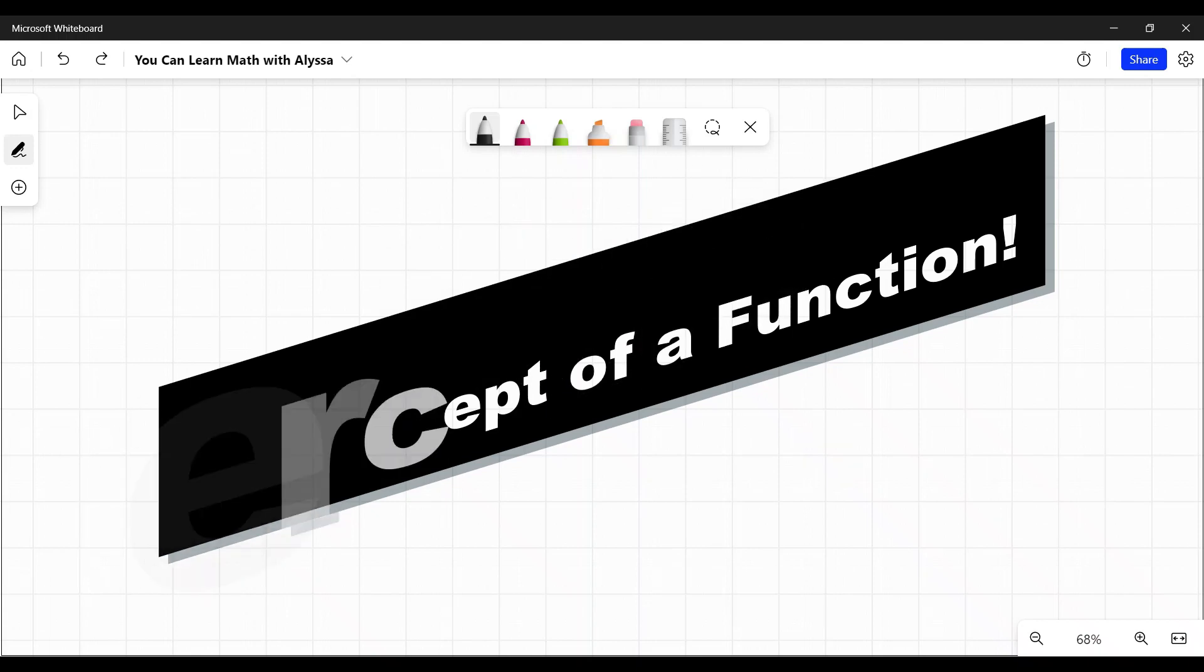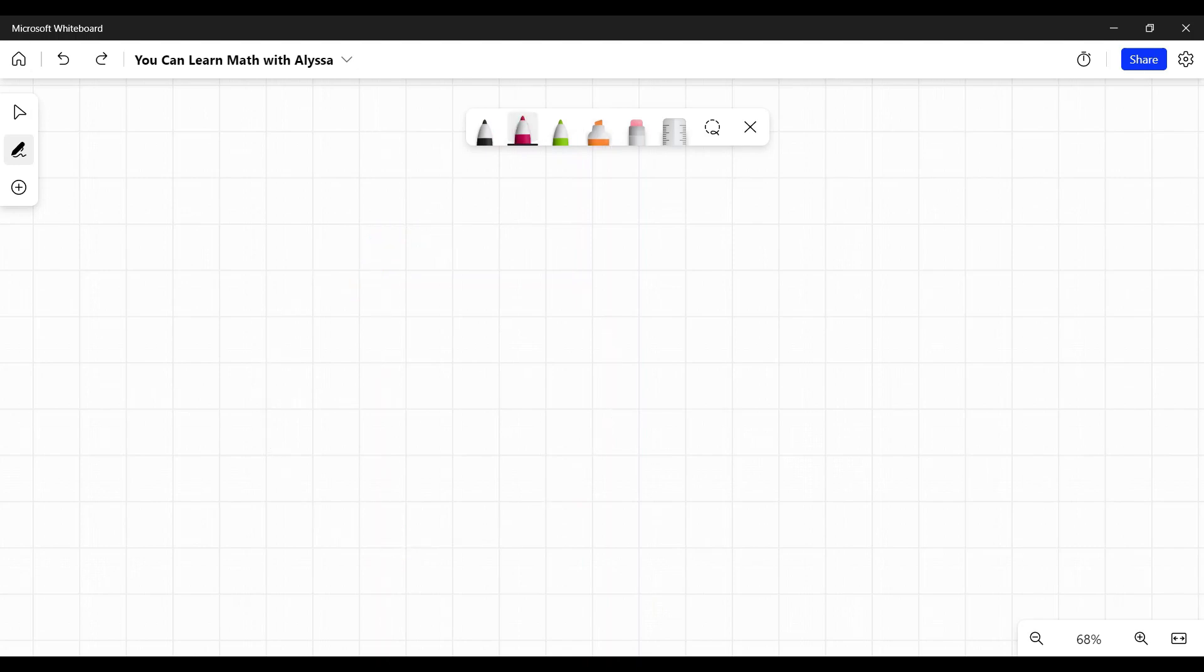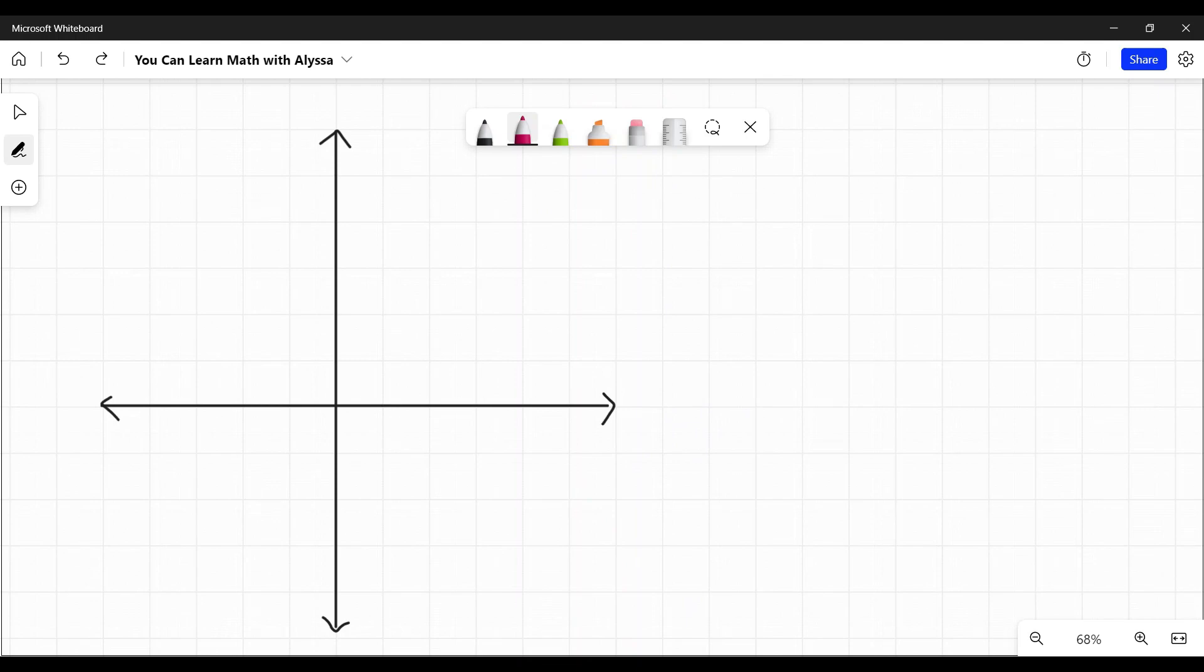So we are not going to be covering things like circles, just functions. Those would be your lines, your parabolas, your cubics, your square roots, all those different ones. We're just going to be doing how to find the y-intercept of these functions. So first off, what is a y-intercept?